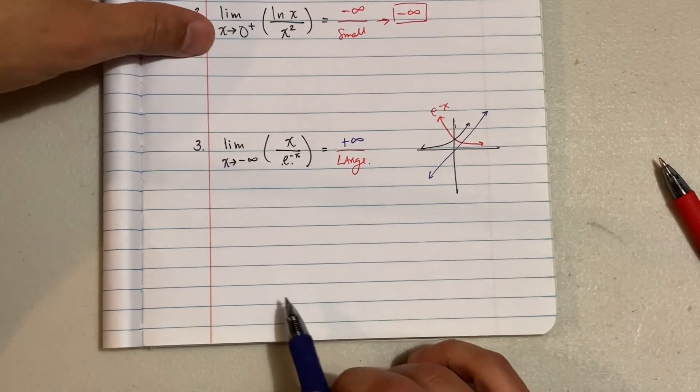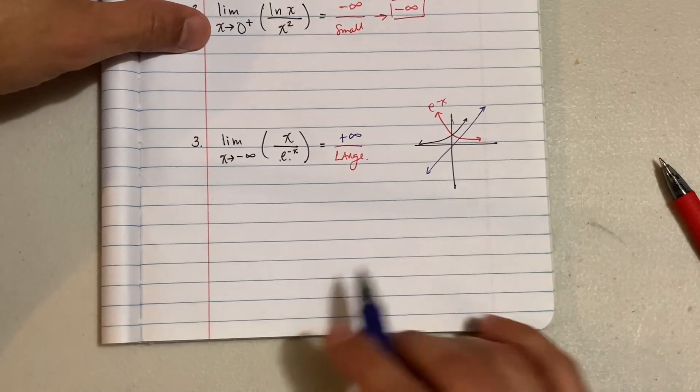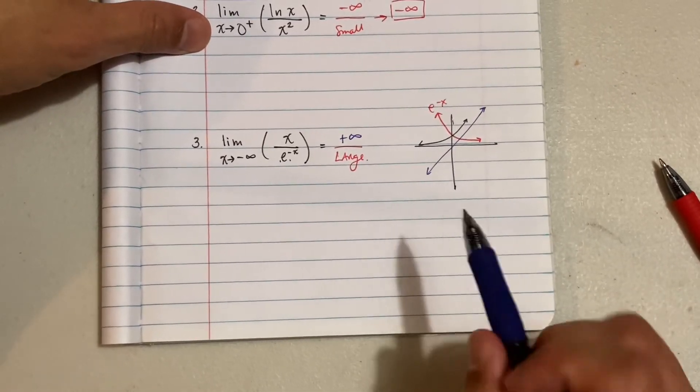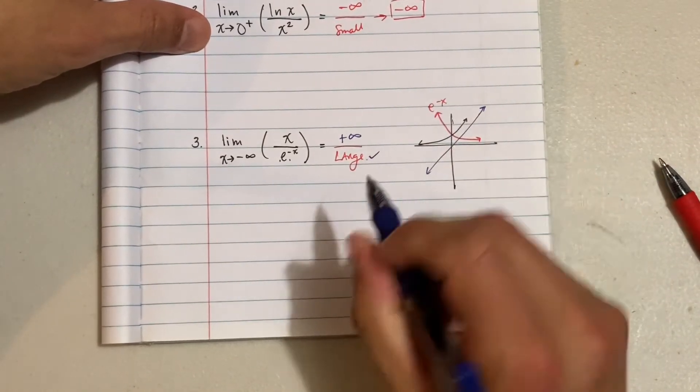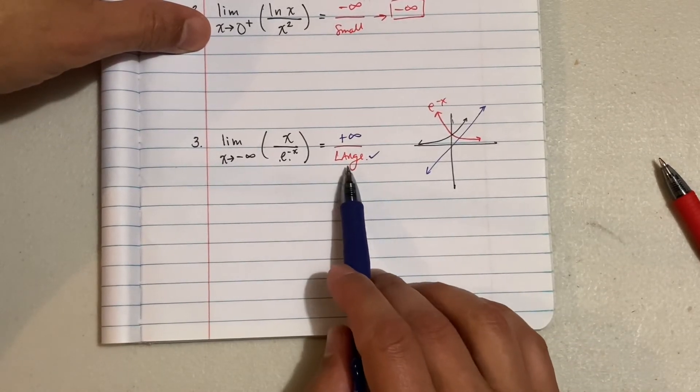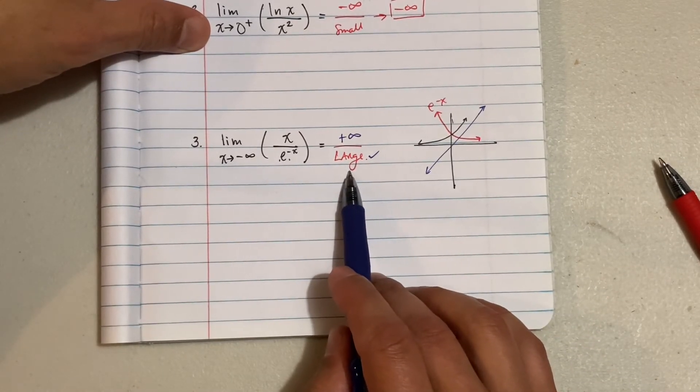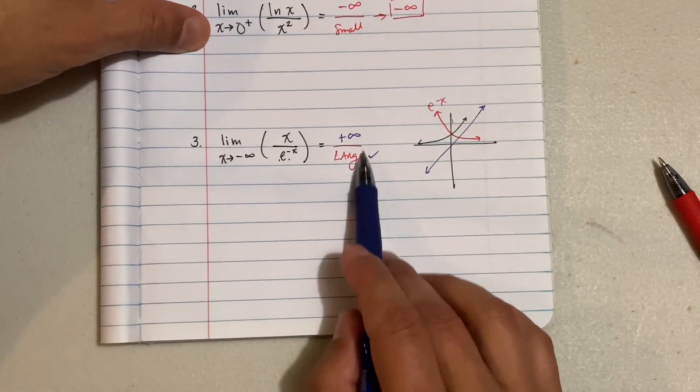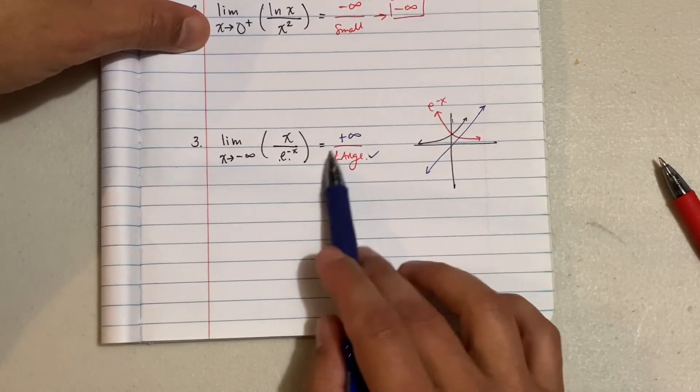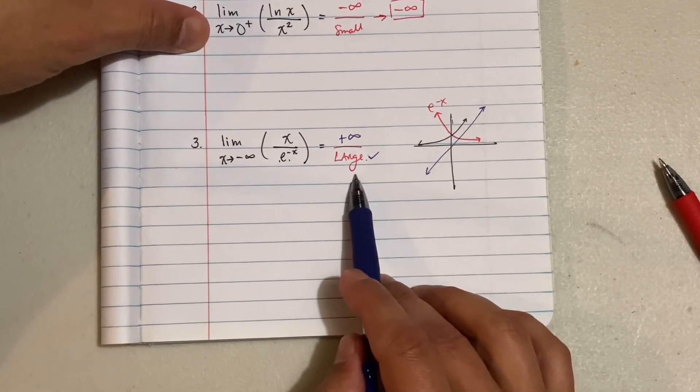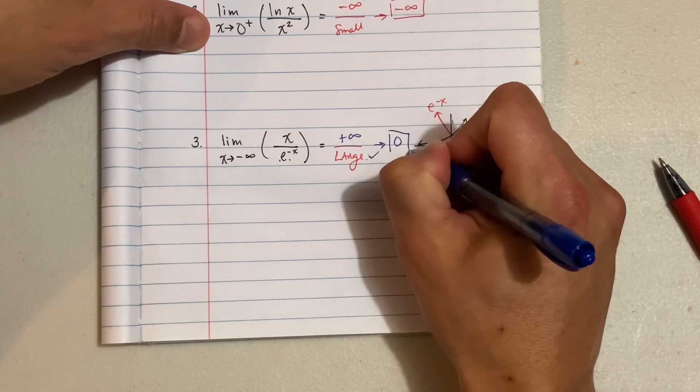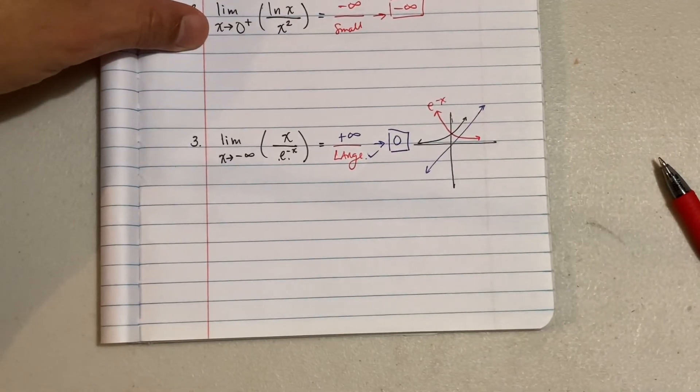But which one is growing faster? Think about it. Which one is growing faster? The exponential here or the linear? This guy, that's right. The exponential is growing faster. So this guy is growing a lot faster than the linear. So because this guy's getting a lot bigger, what happens when we divide by a very, very large number? We get zero. That's right. It approaches zero.